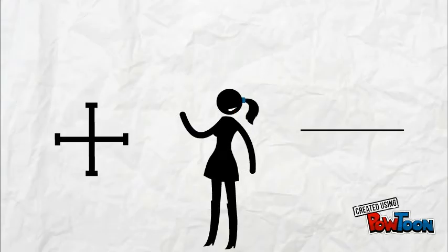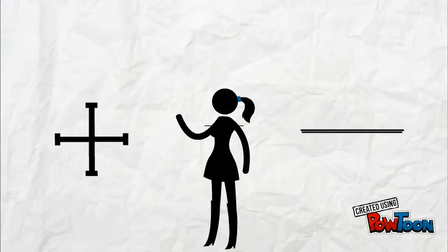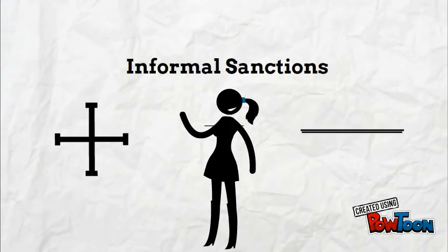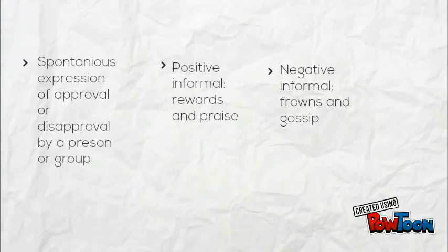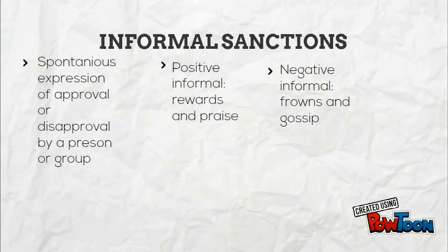Our first two types of sanctions are positive and negative informal sanctions. An informal sanction is not enforced by any type of authority. It is a spontaneous expression of approval or disapproval by an individual or group.